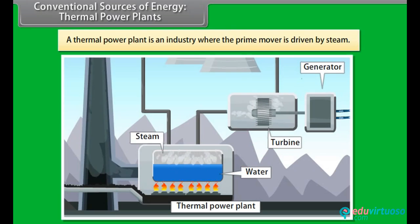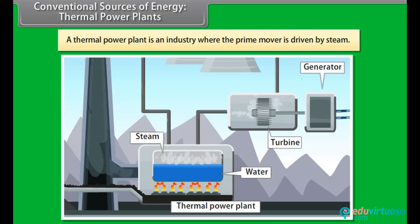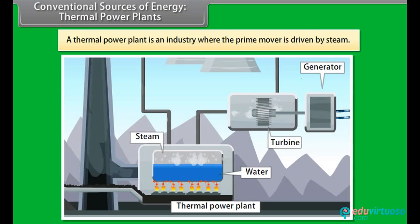Conventional sources of energy — Thermal power plants. A thermal power plant is an industry where energy is generated by steam. Here, water is heated and then turned into steam. This in turn spins a steam turbine, driving an electrical generator. After it passes through the turbine, the steam is condensed in a condenser and recycled to where it was heated.